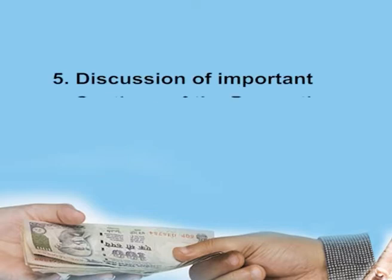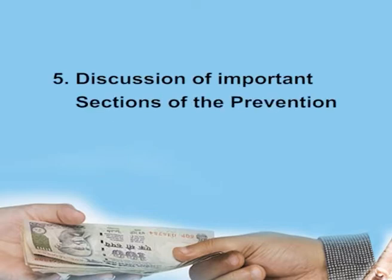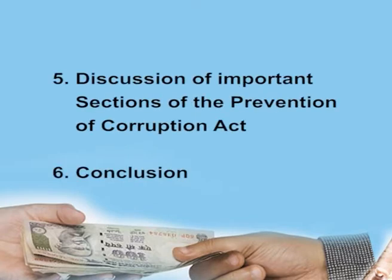Today, I, Anupama Pandit Saxena, will be discussing with you a very relevant topic, that is, the Prevention of Corruption Act 1988, which is also a very important unit of Criminal Law Semester 2nd, paper FSHT 201. In module 5, we will be discussing the important sections of the Prevention of Corruption Act. Module 6 will be concluding the session.